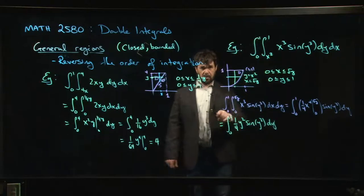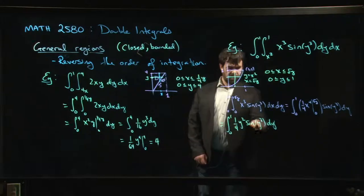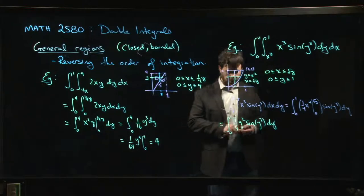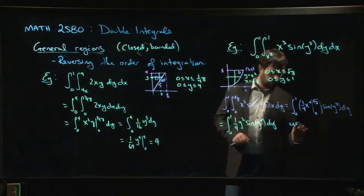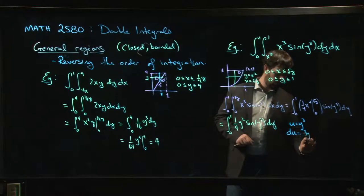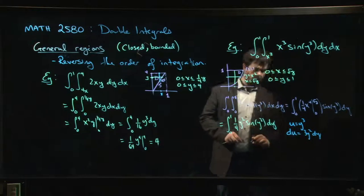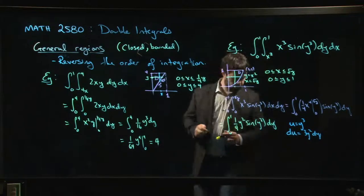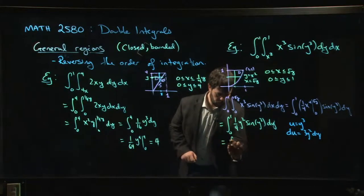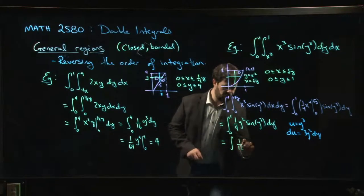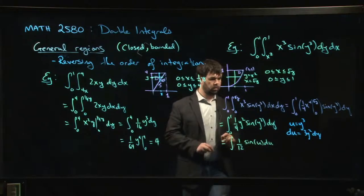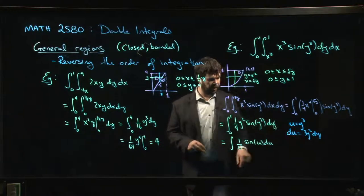All right, and now you can see that you're set up for a u substitution, because the derivative of y cubed is 3y squared. The y squared is sitting right there, so if u is equal to y cubed, du is going to be 3y squared dy, so we got to divide by 3. We get 1 over 12 sine u du.